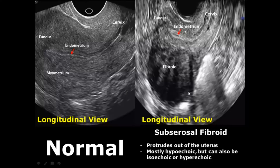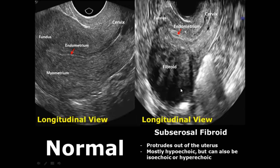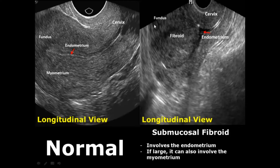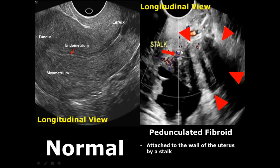The subserosal fibroid will protrude out of the uterus and also appears hypoechoic most of the time. The submucosal fibroid involves the endometrium, but if large enough can also involve the myometrium. The pedunculated fibroid is present in the endometrial canal and is connected to the endometrium by a stalk — we can see blood flow within the stalk on Doppler scan. This one has some calcifications giving posterior acoustic shadowing.